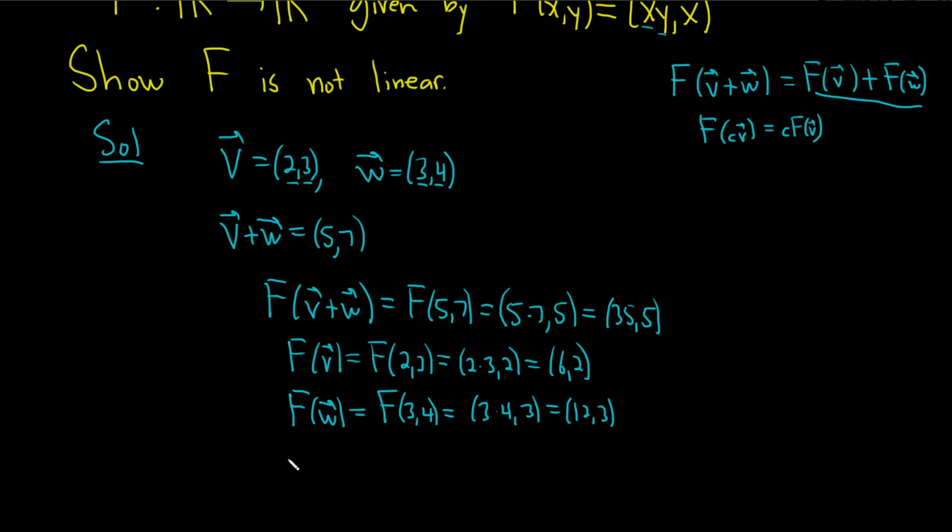So if you add these up, F of v plus F of w, 6 plus 12 is 18 and 2 plus 3 is 5. So that's not equal to F of v plus w.